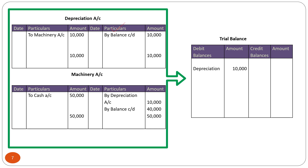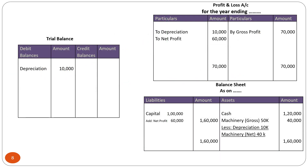We have prepared the Depreciation Account and the Machinery Account. These balances will be transferred to the trial balance. Since we are dealing with the Depreciation Account, we record only the depreciation account with a debit balance of rupees 10,000. This c/d becomes b/d and we record that balance in the trial balance. From the trial balance we prepare the profit and loss account and the balance sheet.